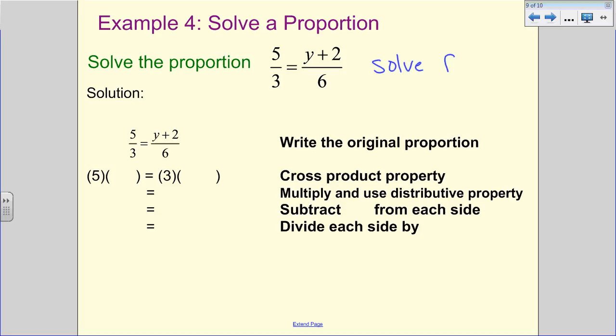You're trying to figure out what Y value would make that solution true, or would make this proportion true. Now, some of you are going to have some mental math strategies, and I'm going to love to hear about those in class. But what we can do is use this cross-product property, which means I can do 5 times 6, and I can do 3 times Y plus 2. Notice we're putting everything in parentheses so that we can remember to multiply. So we're going to do 5 times 6 is 30, but we also want to remember that we're distributing here. So we're going to do 3 times Y, which is 3Y, and then 3 times 2.